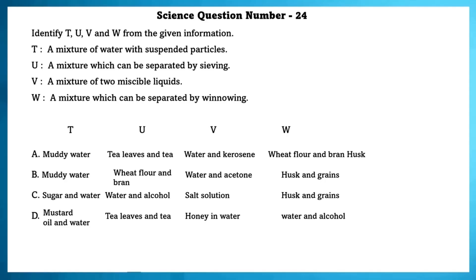Science question number 24. Identify T, U, V and W from the given information. T can be muddy water. U can be wheat, flour and bran. V can be salt solution, water and acetone, honey in water. W can be husks and grains.